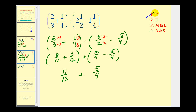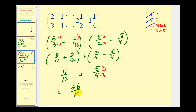Now that we have a common denominator in both sets of parentheses, we add here and subtract here, giving us eleven-twelfths plus five-fourths. The parentheses are done; there are no exponents, no multiplication or division, so we add these two fractions. The least common denominator of twelve and four is twelve. Multiplying five-fourths by three over three gives fifteen-twelfths. So we have eleven-twelfths plus fifteen-twelfths, which equals twenty-six-twelfths.